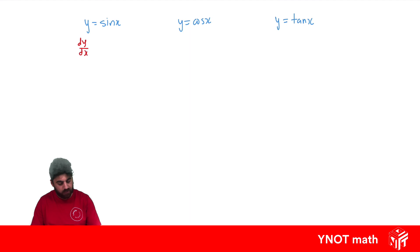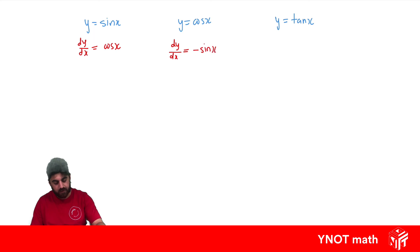When we differentiate sine x, we actually get cos x. When we differentiate cos x, we get negative sine x. And when we differentiate tan x, we get sec squared x.